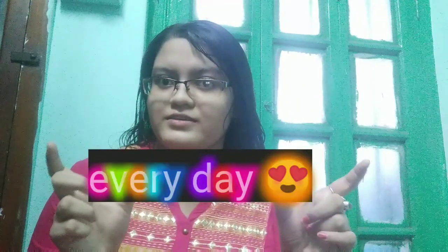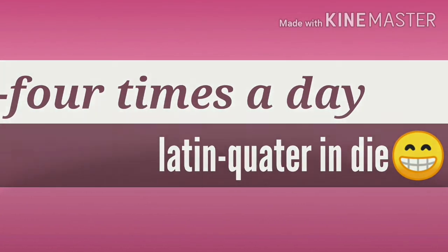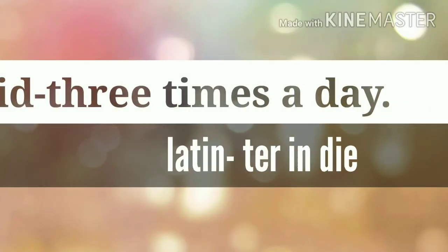Q can be written as Q3H meaning every 3 hours, or Q4H meaning every 4 hours. QD means every day — because in Latin D means day. QID means 4 times a day, from Latin 'quater in die'. TID means 3 times a day, from Latin 'ter in die'.